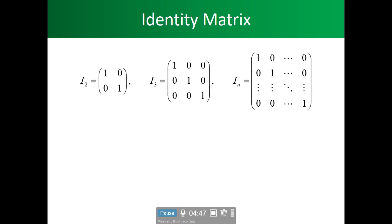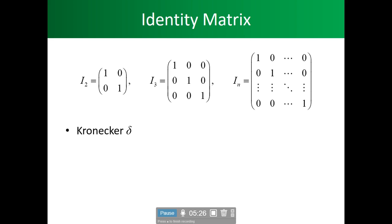We're looking at the identity matrix. The identity matrix is a symmetrical matrix. In a 2×2, you have just the diagonals as 1 and everything else is 0. When you do your 3×3, your diagonals are still 1 and the off-diagonal variables are 0. We can take this all the way to n and it remains the same. There are lots of things that you can do with an identity matrix.